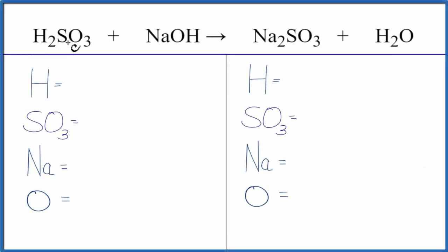To balance this equation H2SO3 plus NaOH, let's count the atoms up on each side. We have two hydrogen atoms and then this SO3, it's a polyatomic ion. We have it here, it stays together, we have it here, so we're going to count this as one item and that'll make the balancing a good bit easier for us.